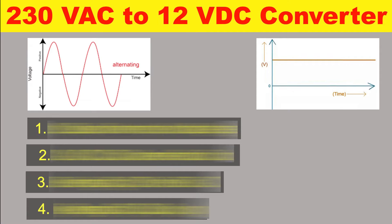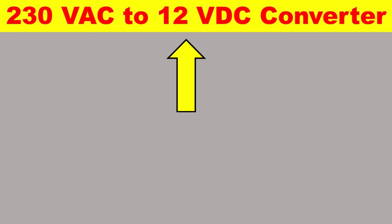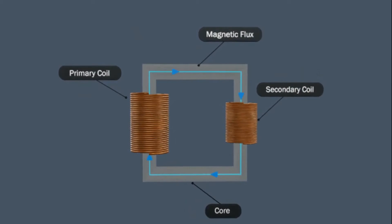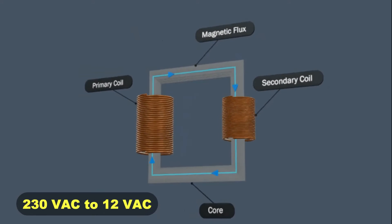The first step is that the 230 volt AC power supply needs to be stepped down and reduced to a lower voltage. How much voltage needs to be reduced depends on how much voltage you need at the output. Since I need 12 volt DC output, I will use a step-down transformer here which can reduce 230 volt to 12 volt.